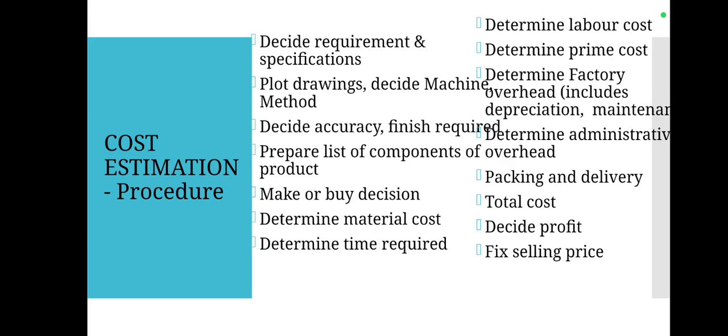Next is machining time calculation — for each and every product, how much machining time is required to complete it. Then the next step is to determine the labor cost. Similar to material cost, labor cost is also split into two types: direct labor cost, which means labor directly involved in completing the product, and indirect labor cost, which means labor indirectly associated with the product.